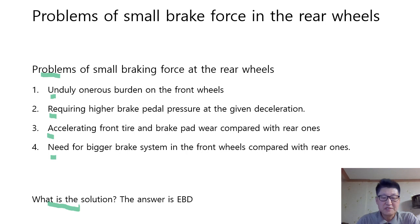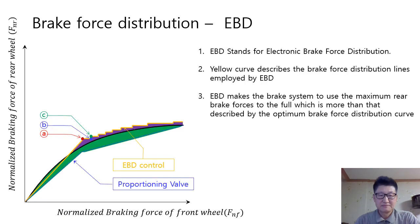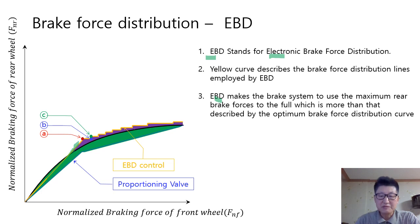What is the solution? The answer is EBD. EBD stands for Electronic Brake-Force Distribution. The yellow curve here looks like a seesaw shape. It describes the brake force distribution lines employed by EBD. EBD makes the brake system use the maximum rear wheel forces to the full, which is more than that described by the optimum brake force distribution curve.